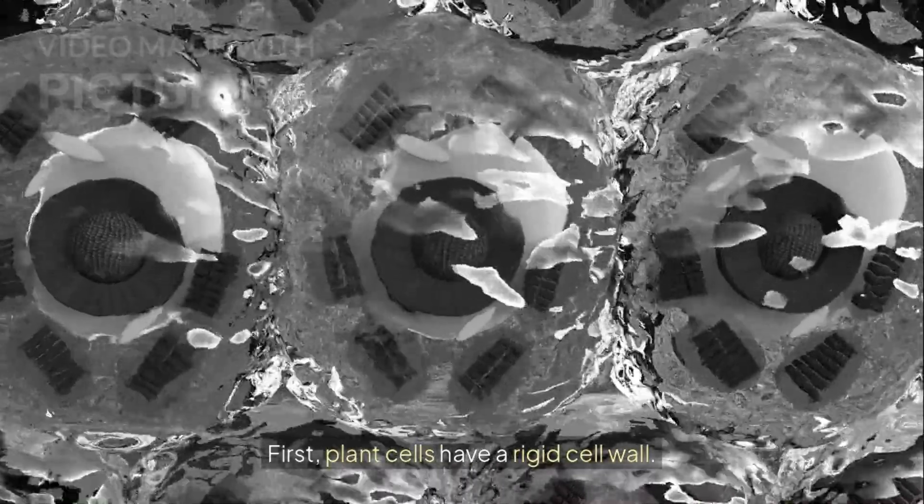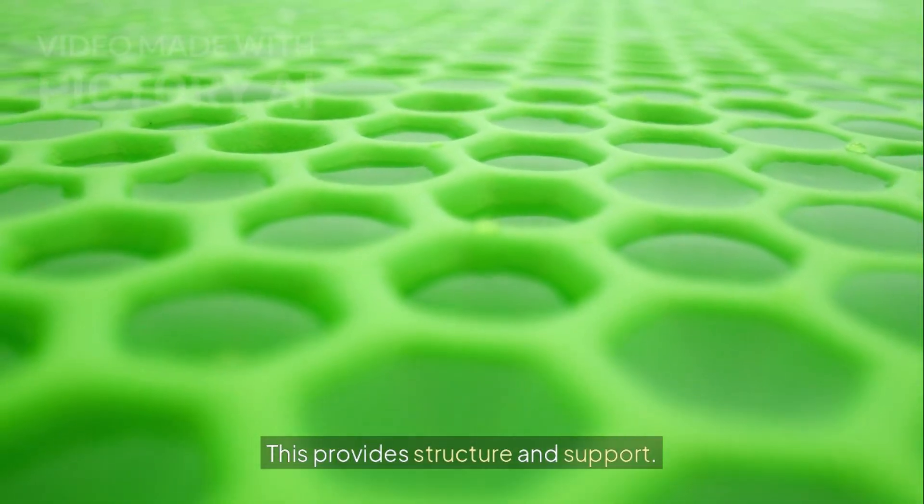First, plant cells have a rigid cell wall. This provides structure and support.